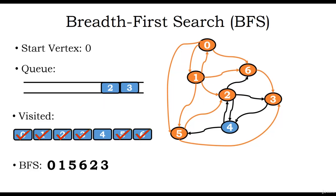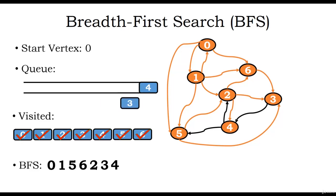We dequeue node 2. From node 2 we can visit node 6, which is already visited. We can visit vertex 3, which is also visited. We can visit vertex 4, which is not yet visited, so we visit vertex 4, mark it as visited, and enqueue it. There are no other edges. We apply a dequeue operation and vertex 3 is dequeued. Through vertex 3 we can visit vertex 4, but vertex 4 is already visited and there are no other edges from vertex 3.